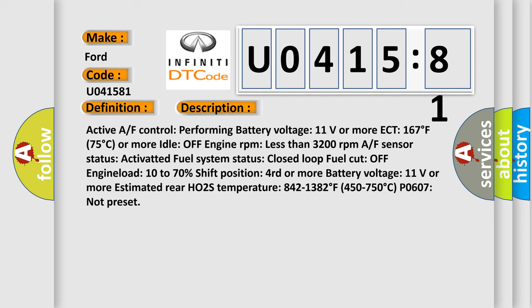Active AF control performing battery voltage 11 volts or more ECT 167°F 75°C or more idle off engine RPM less than 3200 revolutions per minute AF sensor status activated fuel system status closed loop fuel cut off engine load 10 to 70% shift position 4th or more battery voltage 11 volts or more estimated rear HO2S temperature 842-1382°F 450-750°C P0607 not preset.